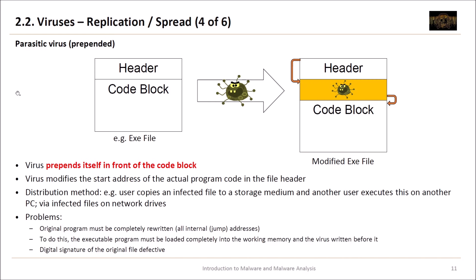Then we have the same class of virus but prepended — it writes itself in front of the code block. The problem here is that the original program must be completely rewritten by the virus because all internal jumps are now to different addresses, making this very impractical from the virus developer's point of view. Digital signatures of the exe file are also destroyed because the virus is now prepended and everything changed.